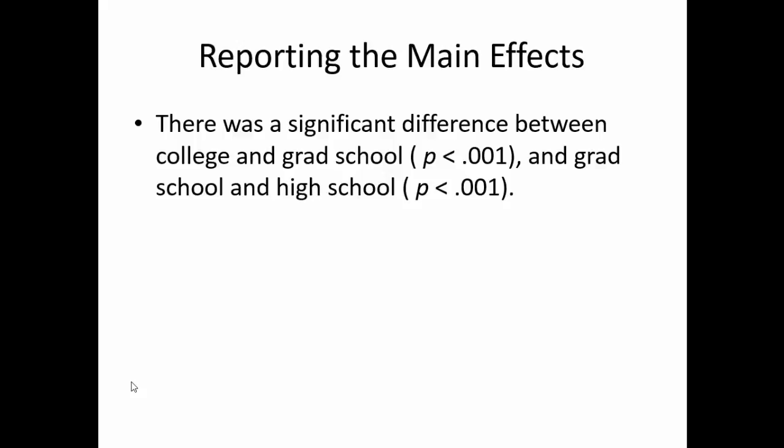We will look at the post-hoc table for this last write-up. There was a significant difference between college and grad school, p less than .001, and grad school versus high school, p less than .001. And overall, that is how you run a two-way between-subjects ANOVA.